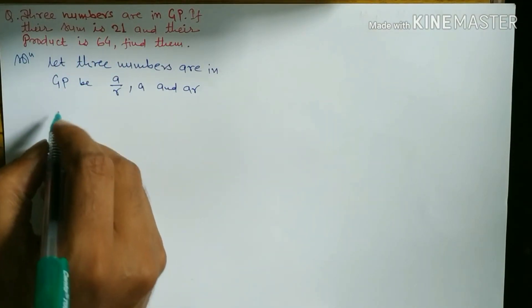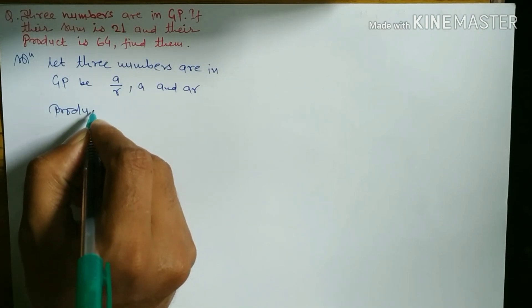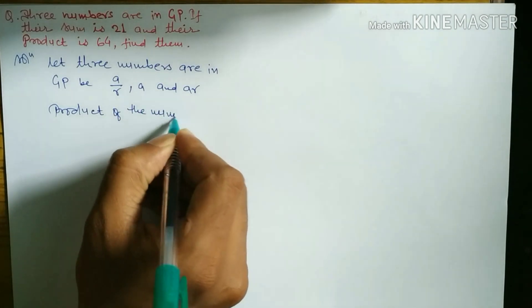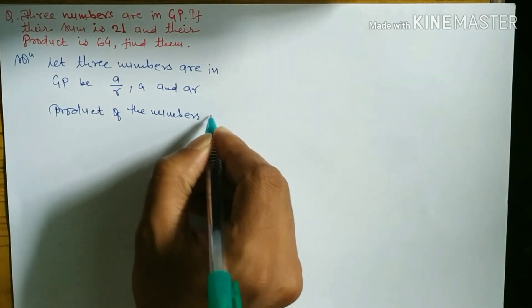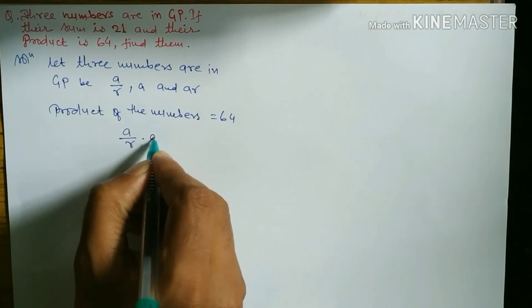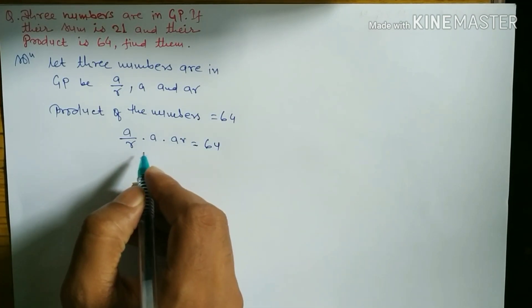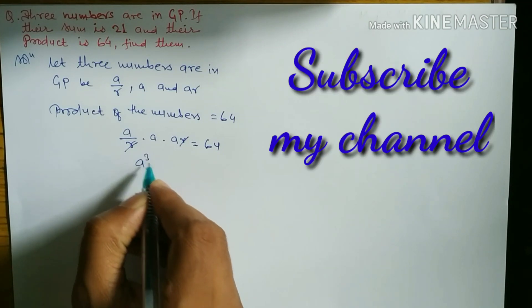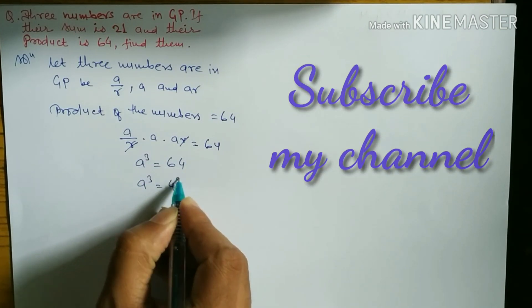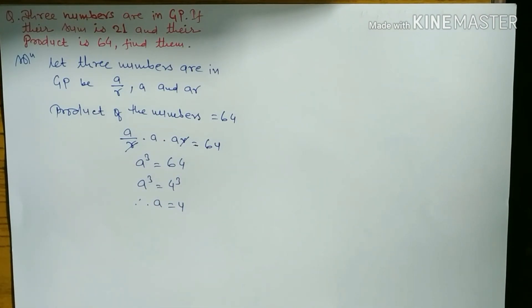Let's take the product first. Product of the three numbers is 64. So (a/r) × a × ar = 64. The r and 1/r cancel, giving a³ = 64. Therefore a = 4.